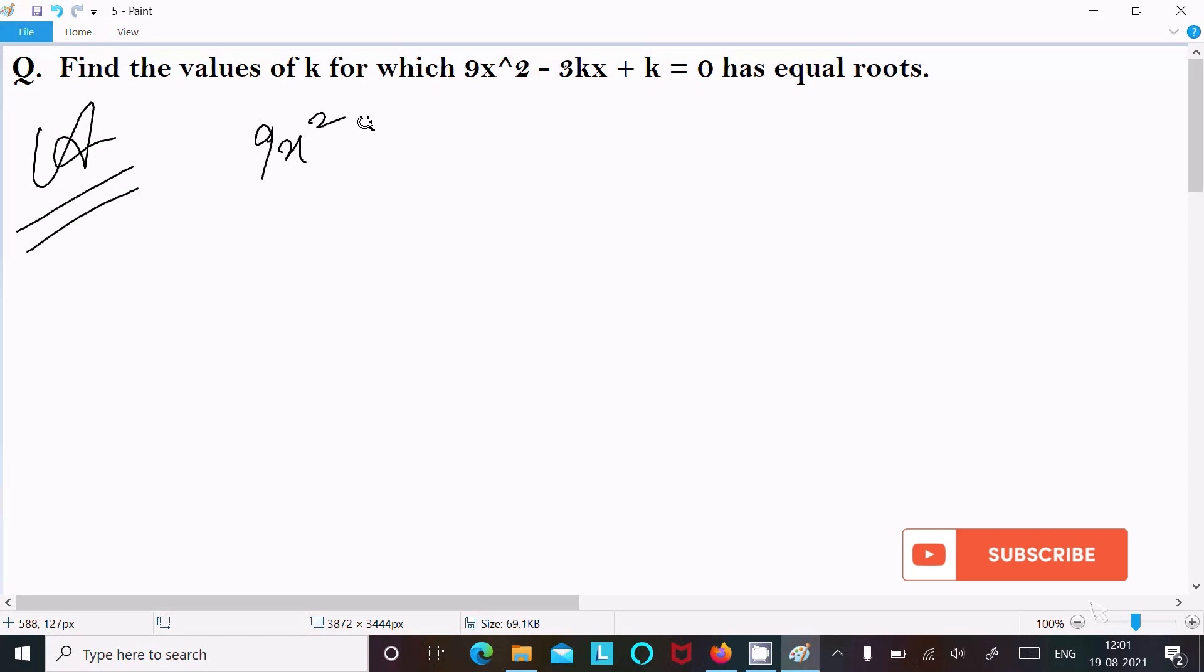9x² - 3kx + k = 0. I am going to compare this with the general form of quadratic equation, that is ax² + bx + c = 0. Now from here we can easily identify a.